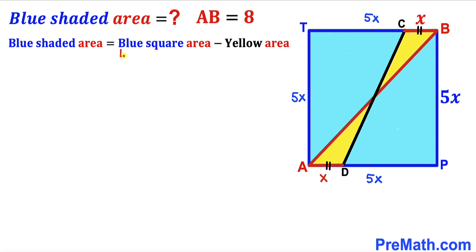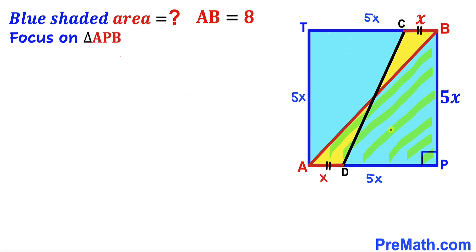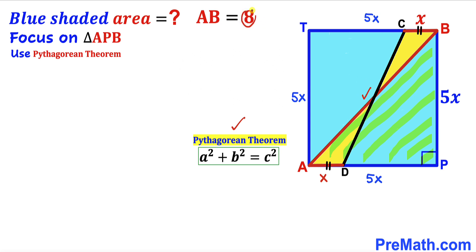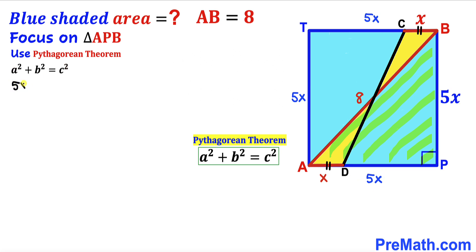Now let's calculate the area of the blue square and the yellow shaded region. Focusing on right triangle APB, we have a 90-degree angle at P. Applying the Pythagorean theorem — A² + B² = C² — AB is the hypotenuse equal to 8, and the two legs are each 5X. So we get (5X)² + (5X)² = 8².